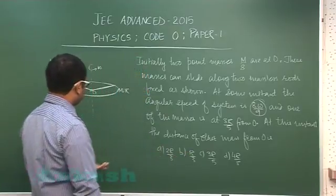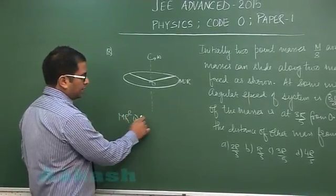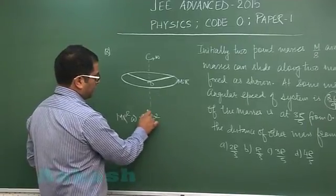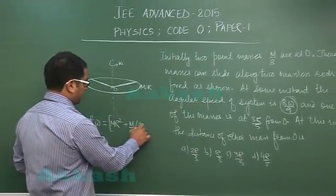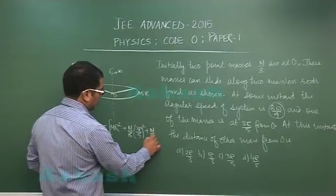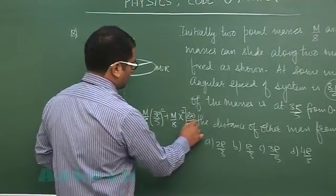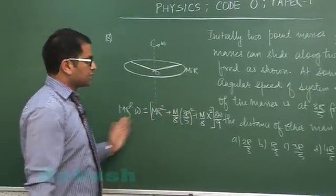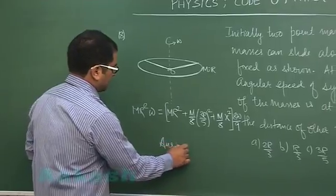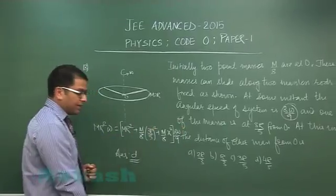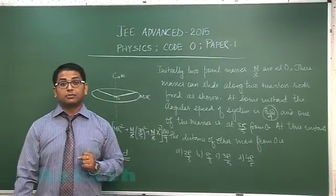That is straightaway conservation of angular momentum, where initial angular momentum is mr square into omega. Final for the ring would be mr square, and the next particle m by 8 is at a distance 3r by 5, so 3r by 5 whole square, and for the third m by 8 x square. Omega at that instant is 8 omega by 9. This is purely conservation of angular momentum: I1 omega 1 equals I2 omega 2. That will give us option number d, so the correct value of x would be 4r by 5, which would be option number d for question number 18. And together with this, now we finish section 2. Now we'll move to section 3.